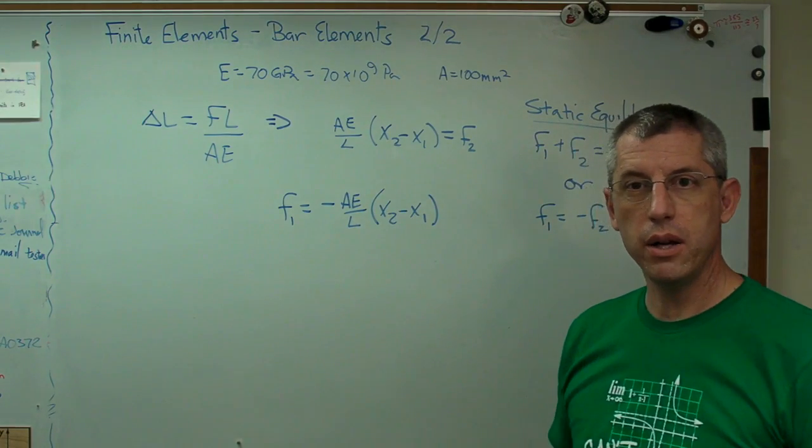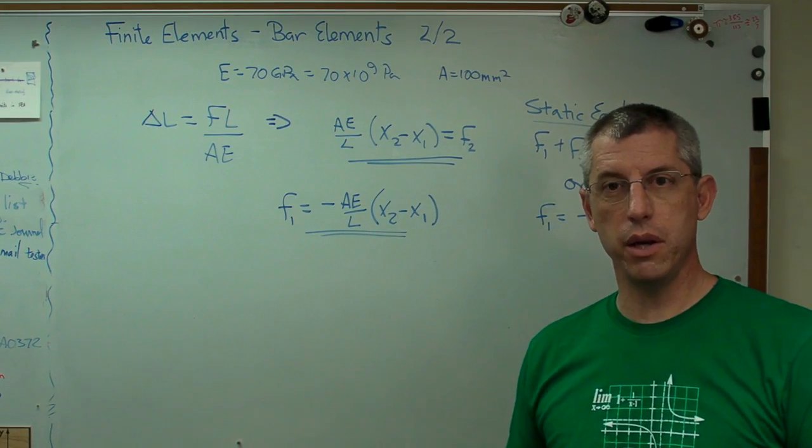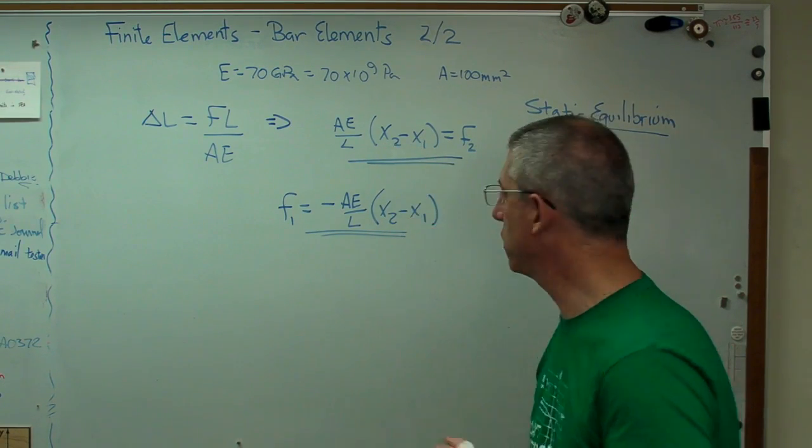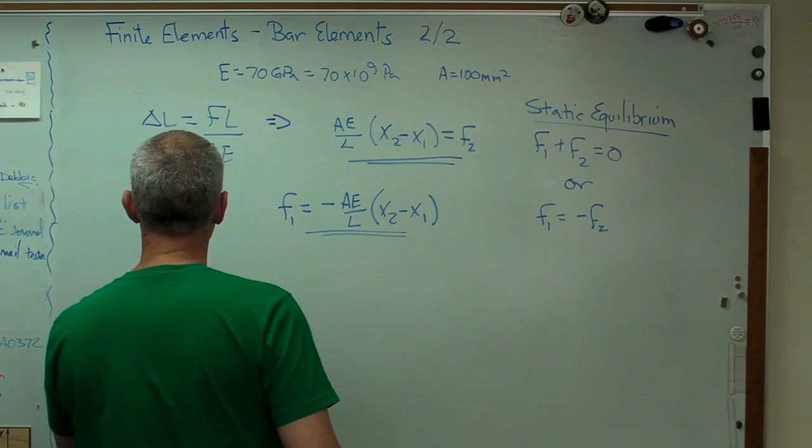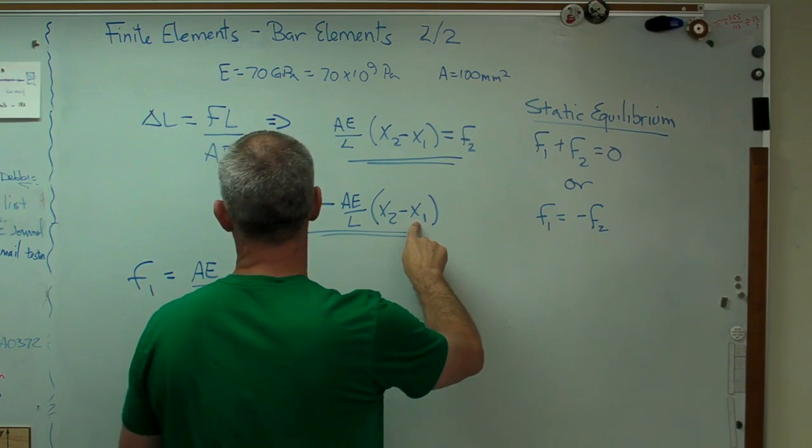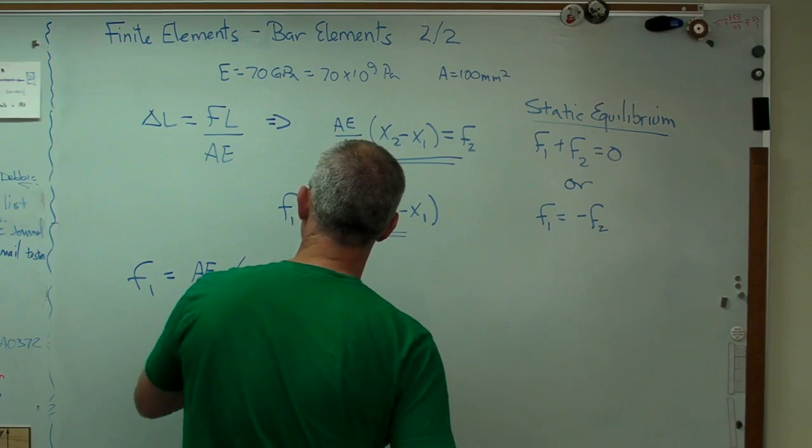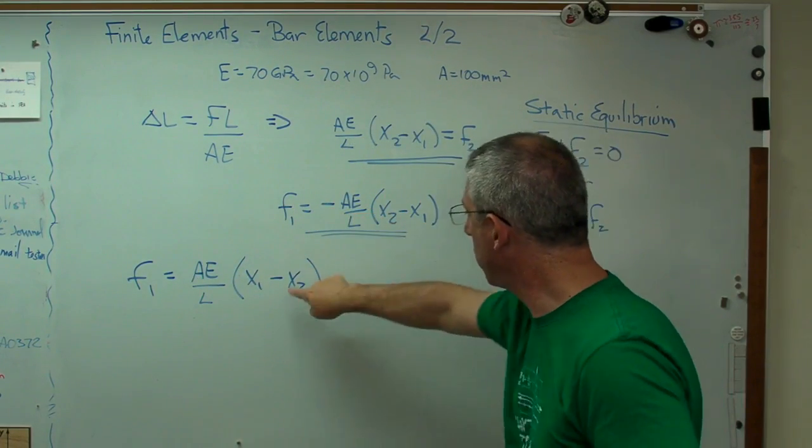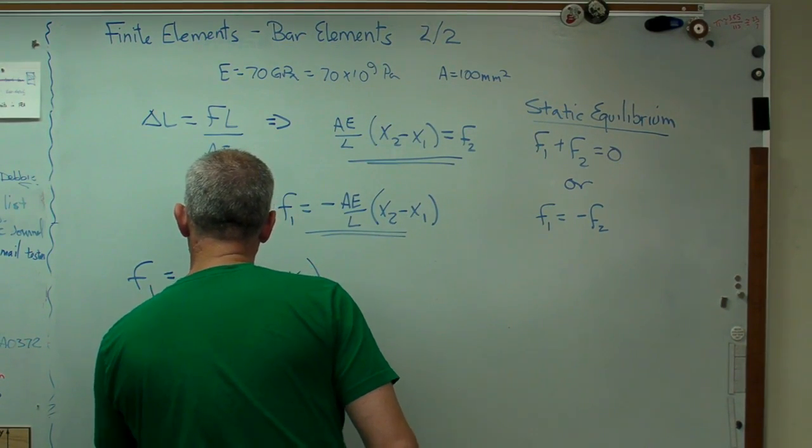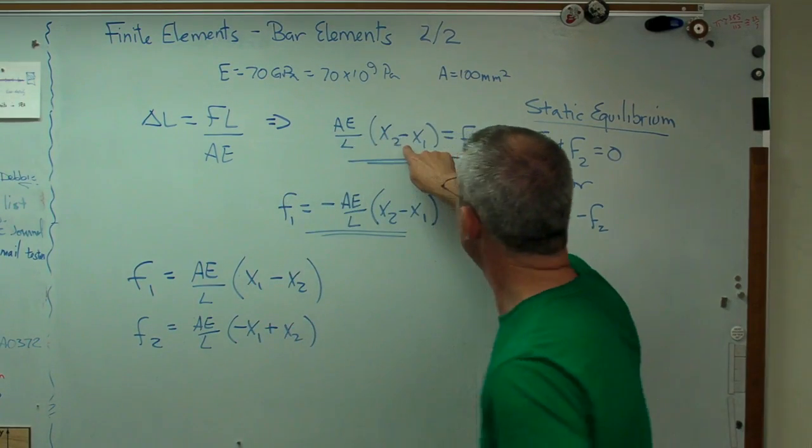All I got to do now, see these are two different expressions. These are not the same equation. I can write these out as a matrix expression. And what I'm going to do is I'm going to write them out in order so x1 appears first and x2 appears second. So here's what I'm going to write. f1 equals ae over l minus x1 minus x2. What I did is I put that minus sign inside there and I just reversed the order of those two right there. And the other thing I said is f2 equals ae over l minus x1 plus x2.